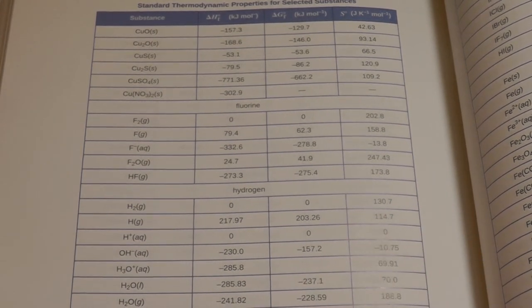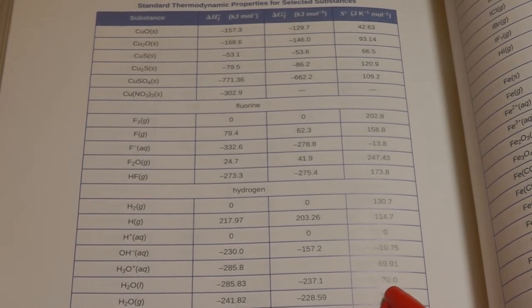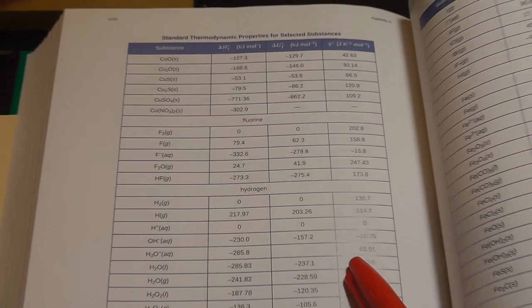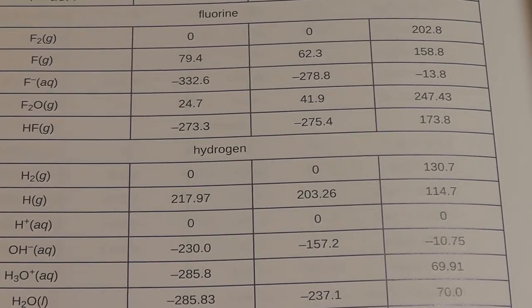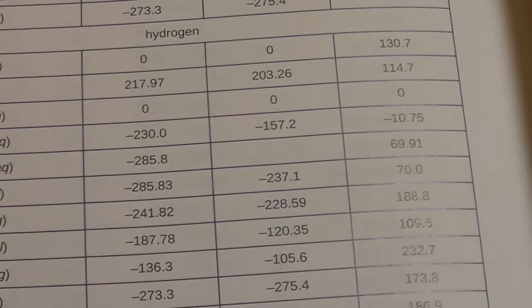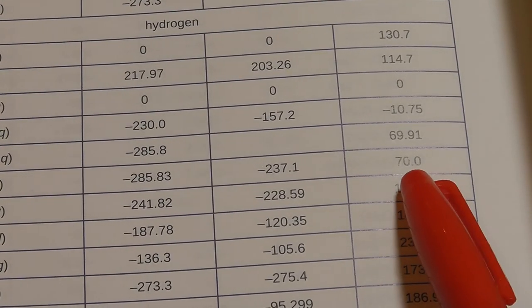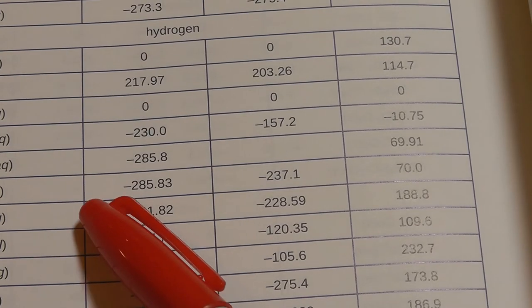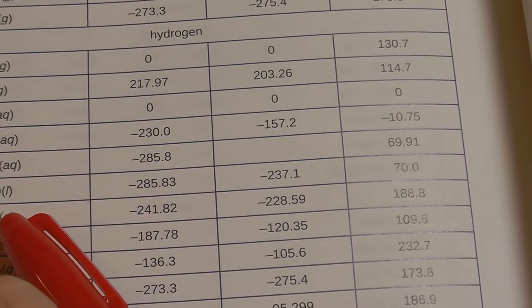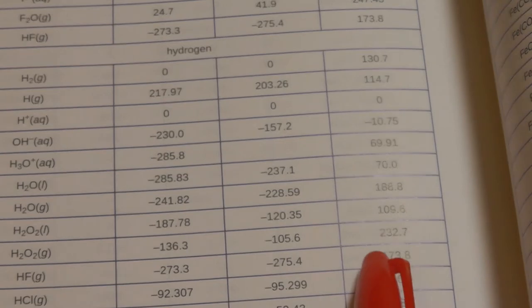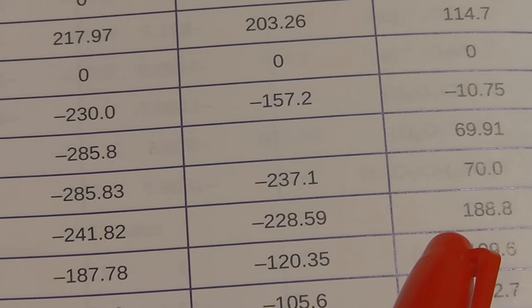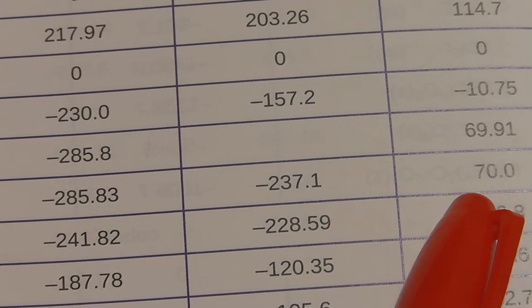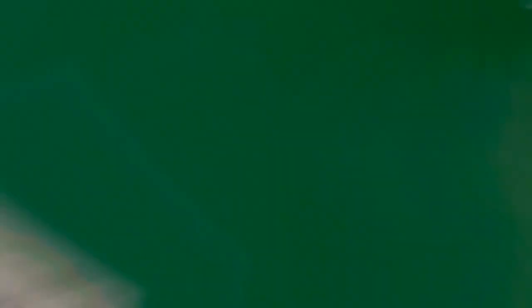You've got delta H and delta G, and over here we've got some values of entropy. The units are a little different - instead of kilojoules per mole, it's in joules per kelvin per mole. Let's look at water. Water liquid's entropy is 70, but water gas vapor is 188.8.